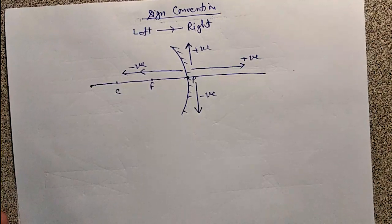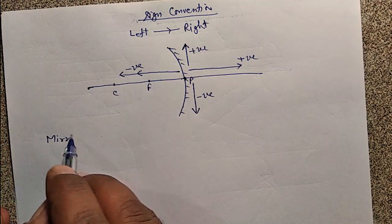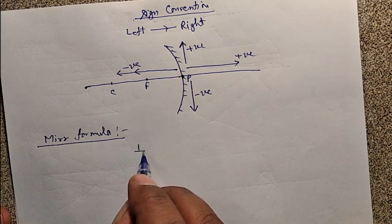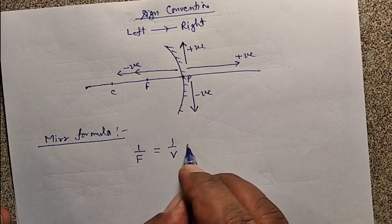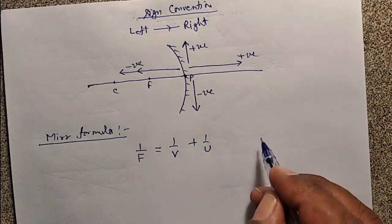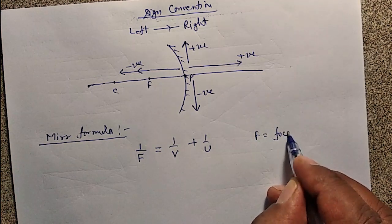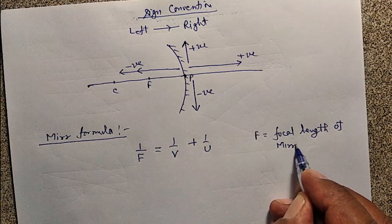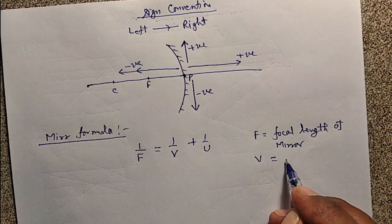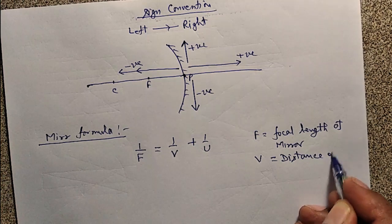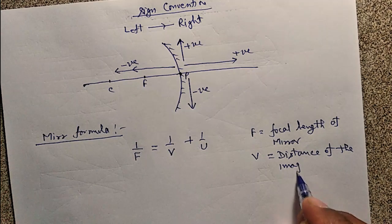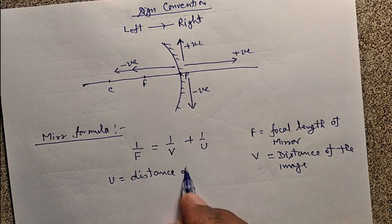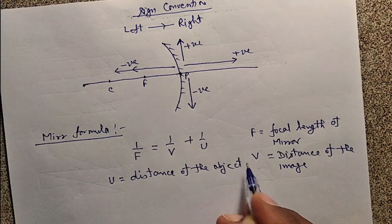Next is the mirror formula. The mirror formula is: 1 upon f is equal to 1 upon v plus 1 upon u, where f is the focal length of the mirror, v is the distance of the image, and u is the distance of the object.